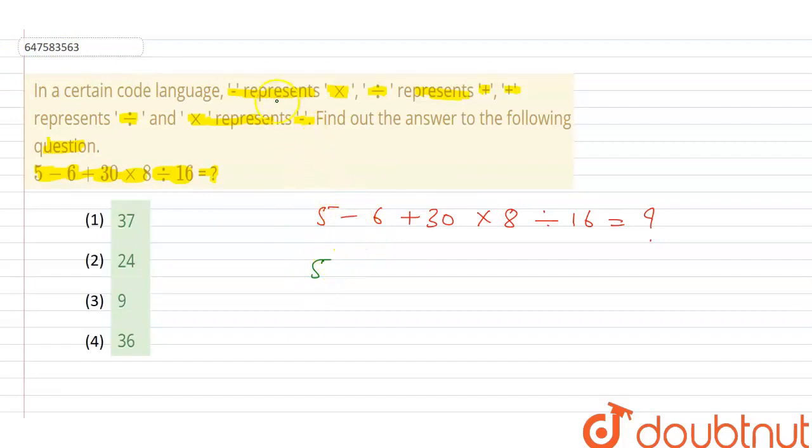Because guys, 5 then minus is given. So minus is represented by multiply, so here it will be multiply. Then 6 here is positive, and positive is represented by divide. So here it is divided. Then 30 is multiply. Multiply can represent minus. So this is minus. So here it is minus.